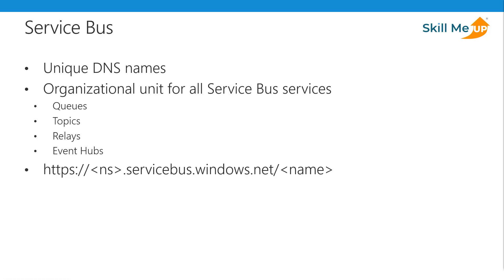Azure Service Bus is a messaging-as-a-service — an asynchronous cloud delivery messaging service that offers secure data transfer between different applications. When you first set it up, you generate a unique DNS namespace as a subdomain. Within that namespace, you can use one or more of four different types of communication mechanisms: queues, topics, relays, and event hubs. The namespace name and item together create the URL for each Service Bus entity.